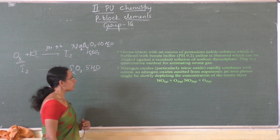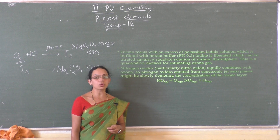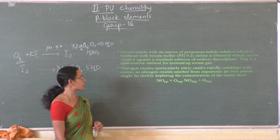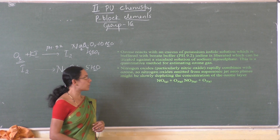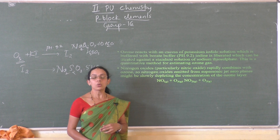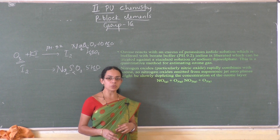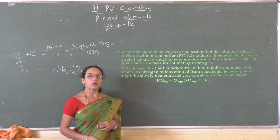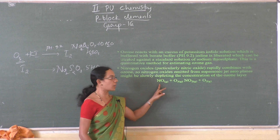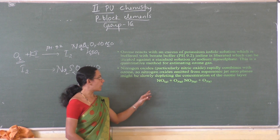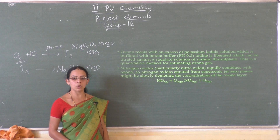Nitrogen oxides, particularly nitric oxide NO, rapidly combine with ozone. Nitrogen oxides emitted from supersonic jet aeroplanes might be slowly depleting the concentration of the ozone layer. The depletion of the ozone layer is also caused by freons or CFCs (chlorofluorocarbons), and also by nitric oxide liberated from the exhaust system of supersonic jet aeroplanes.